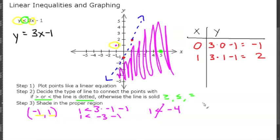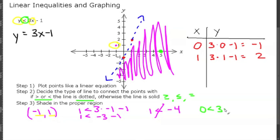Our shaded region contains all the values we can plug in for x to get the correct y. To make sure this is correct, let's pick a point in the shaded region and test it — but remember, we cannot pick a point that lies on the dotted line. Let's pick the point (5, 0). Plugging in, 0 is less than 3 times 5 minus 1, which is 15 minus 1, which is 14. And 0 is less than 14, so that checks out.